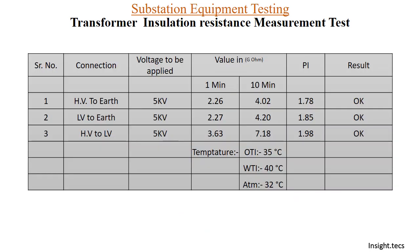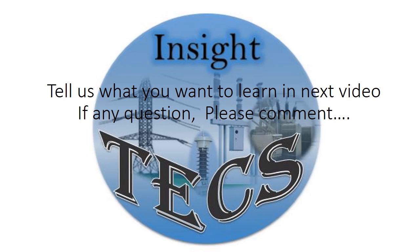All readings for HV to earth, LV to earth, and HV to LV have been compiled — applied voltage, values at one minute and ten minutes — and based on those we calculated the PI (polarization index). It is important to note that while measuring IR values, we must record the oil temperature, winding temperature, and outside atmosphere temperature, because these temperatures can cause variation in the IR values and PI value. This is how you measure the insulation resistance of a transformer. If you have any queries, ask in the comment section below. Thank you.